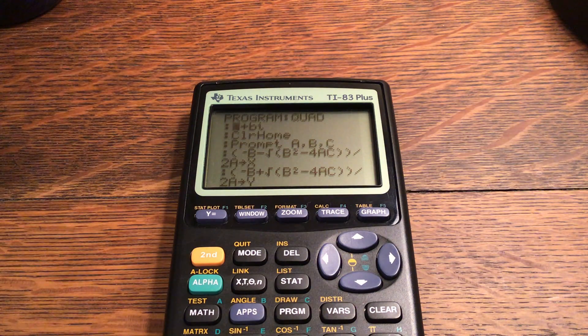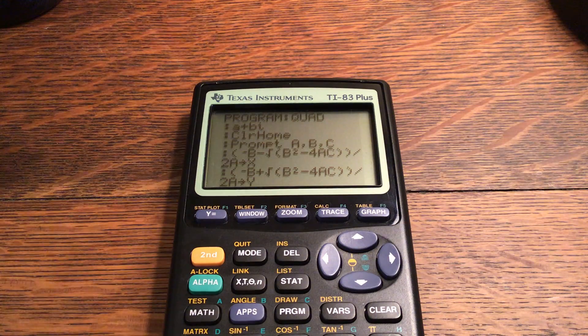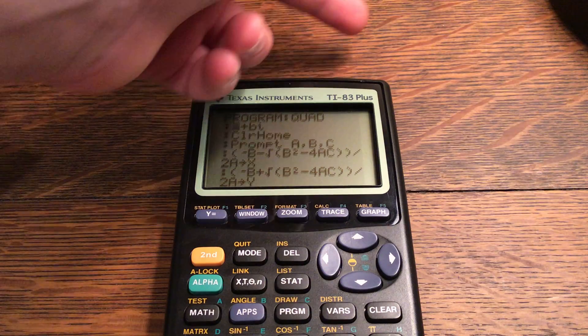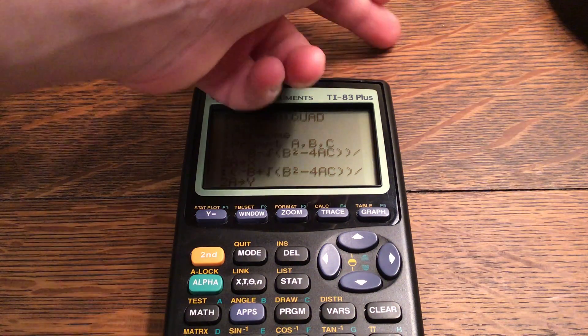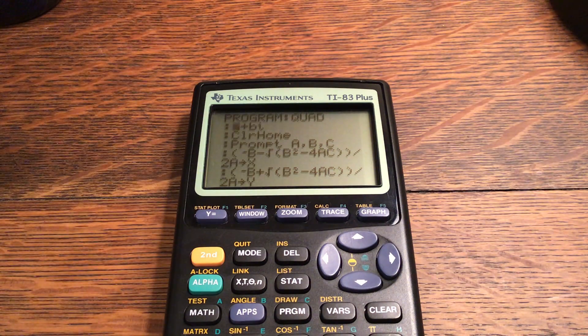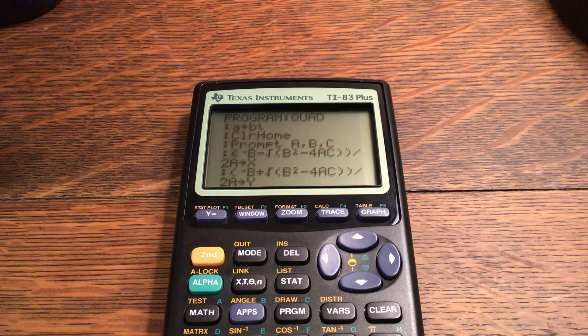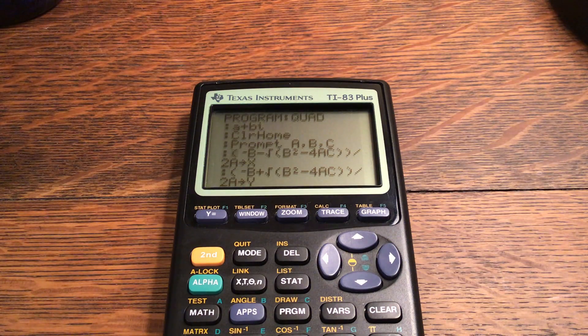Then you prompt A, B, and C, which are your three values. A being the X squared number, B being the number in front of X, and C being the value that it is adding or subtracting at the end. Then you have the quadratic formula, which is negative B plus or minus the square root of B squared minus 4AC all over 2A.